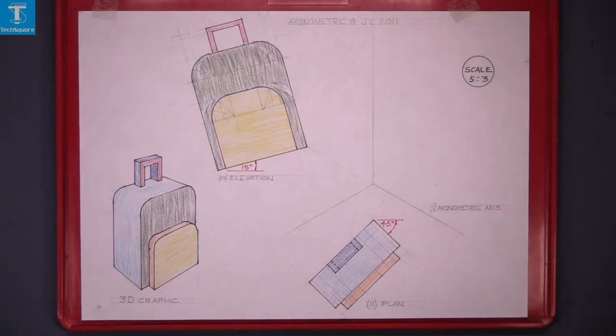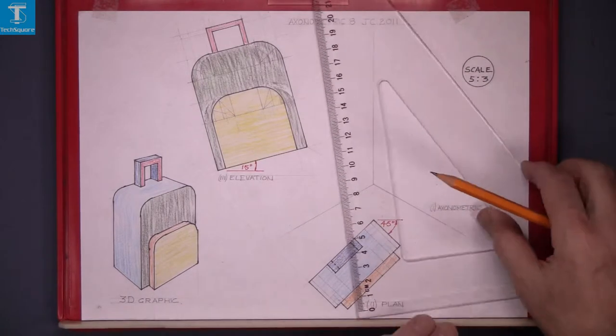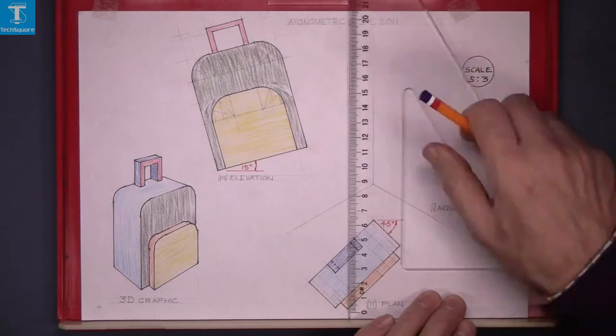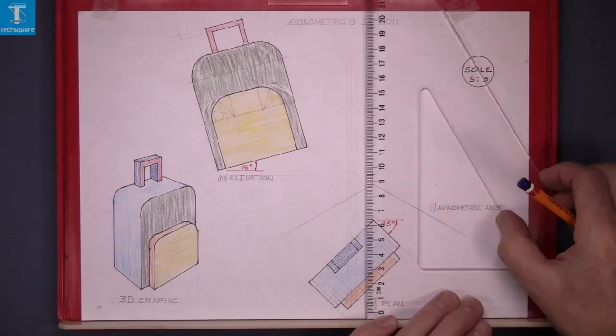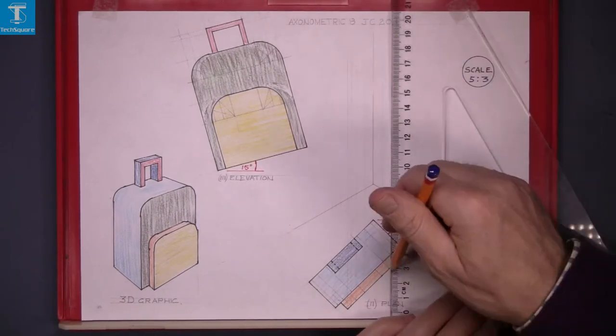Project the points up. Draw this front part here first. So project the points up. That's the points on the circle.